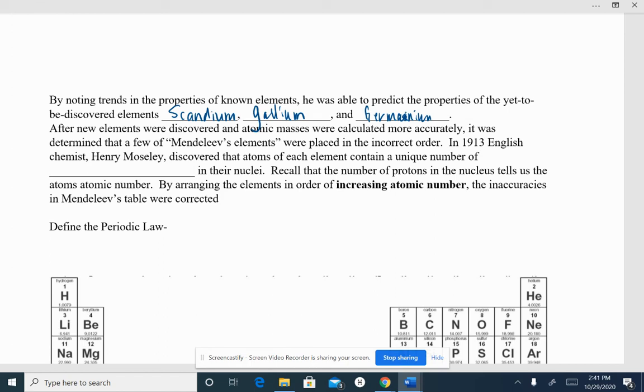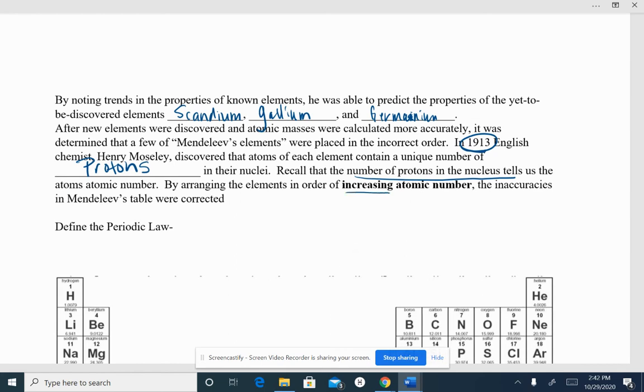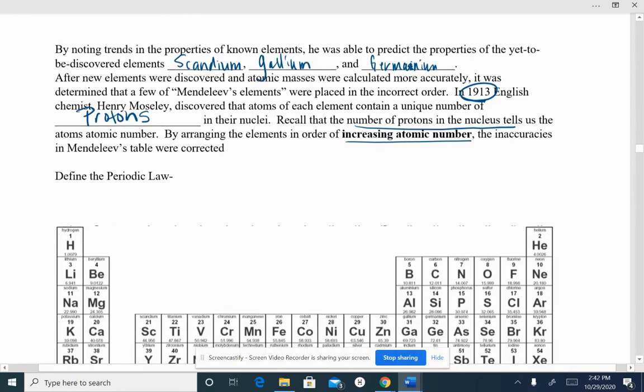After new elements were discovered and atomic masses were calculated more accurately, it was determined that a few of Mendeleev's elements were placed in the incorrect order. So in 1913, a chemist named Henry Moseley, British guy, discovered that atoms of each element contain a unique number of protons. This is when we're playing with electrons, we're discovering protons. Neutrons haven't even been discovered yet. So we are looking at protons now. And instead of using mass, we are going to use protons in the nucleus to order our things. So we rearrange Mendeleev's table not to mass, but to protons, the atomic number.